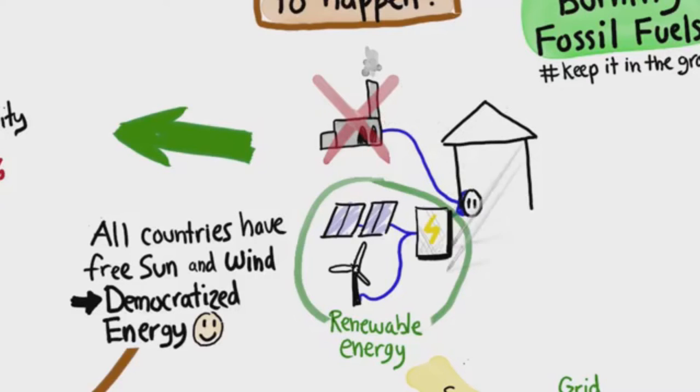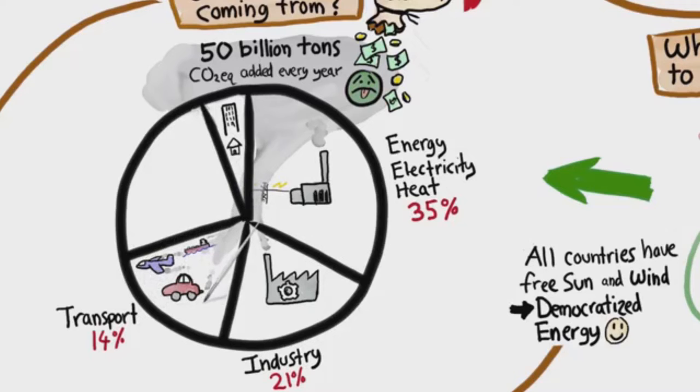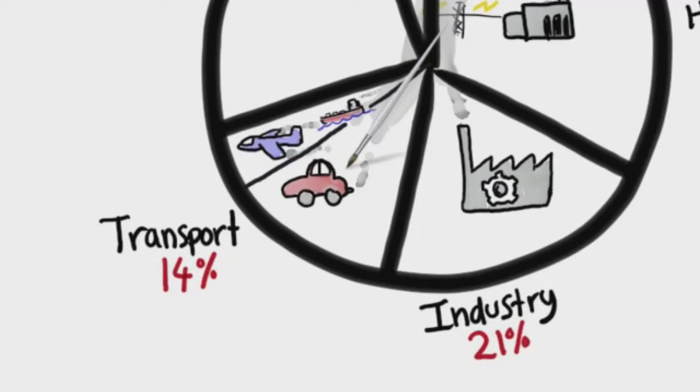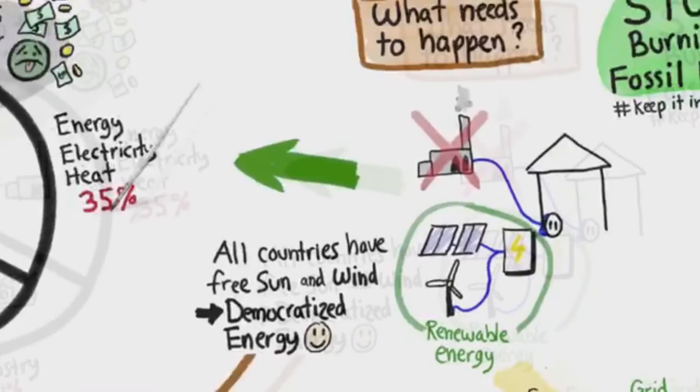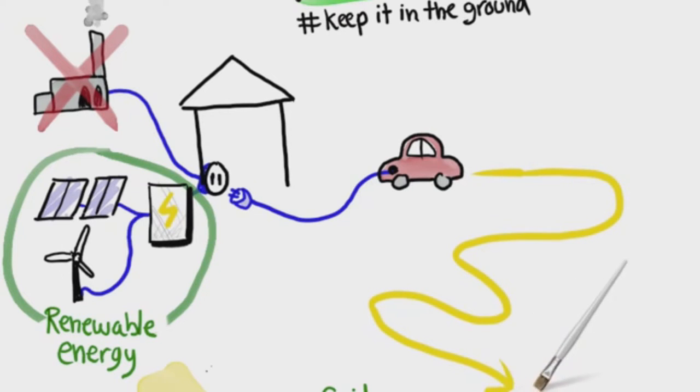What about transport then? Transport accounts for about 14 percent of all emissions, three quarters of that from fuel cars including trucks and buses. But now we have electric cars—plug it in and charge it up just like you do with your phone. Range used to be a problem, but now some electric cars can go over 500 kilometers on one charge.